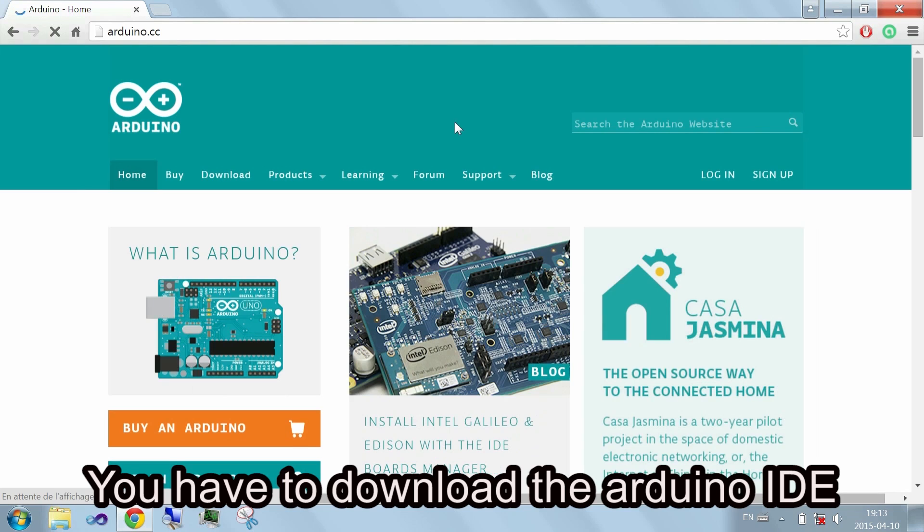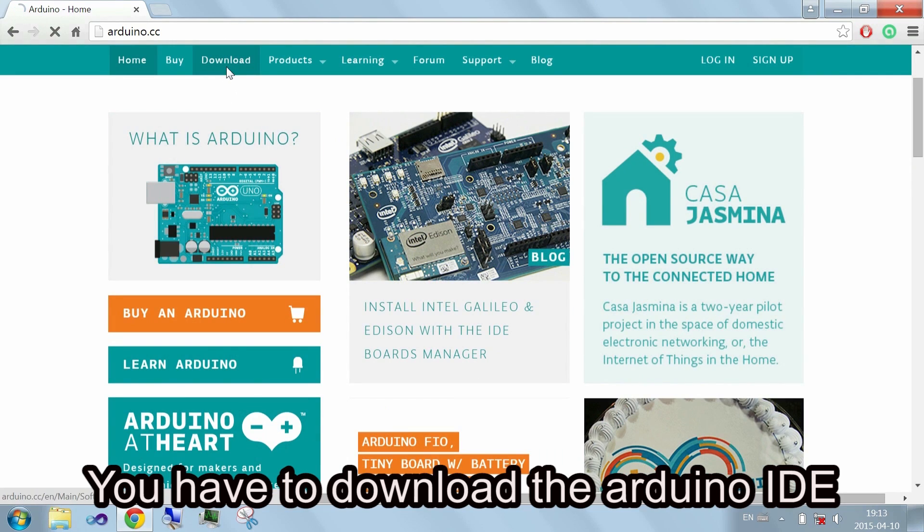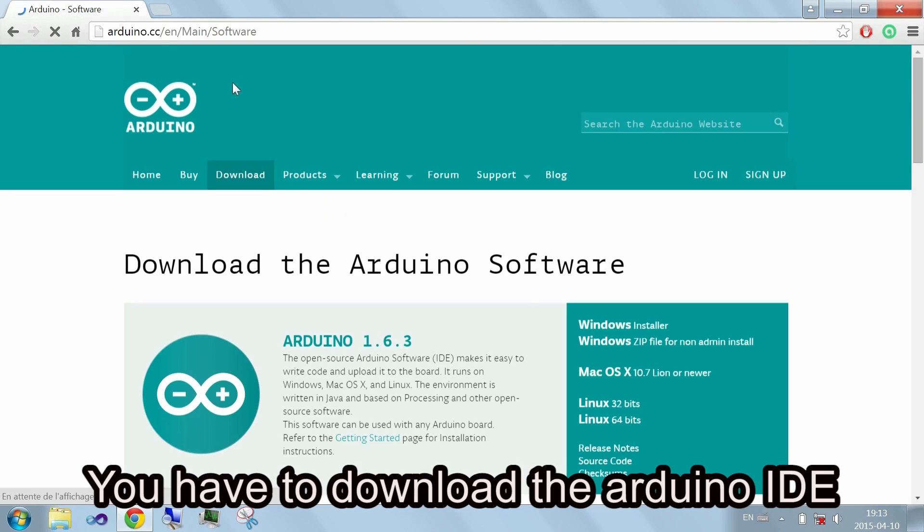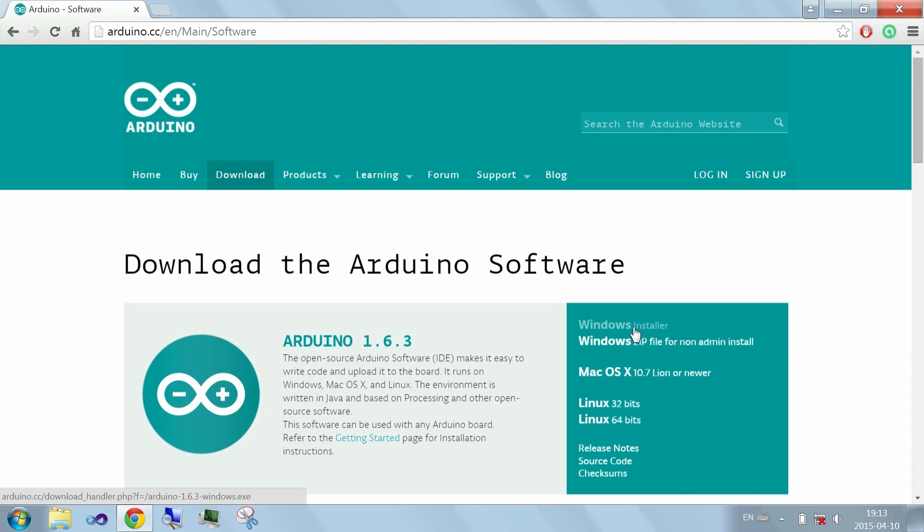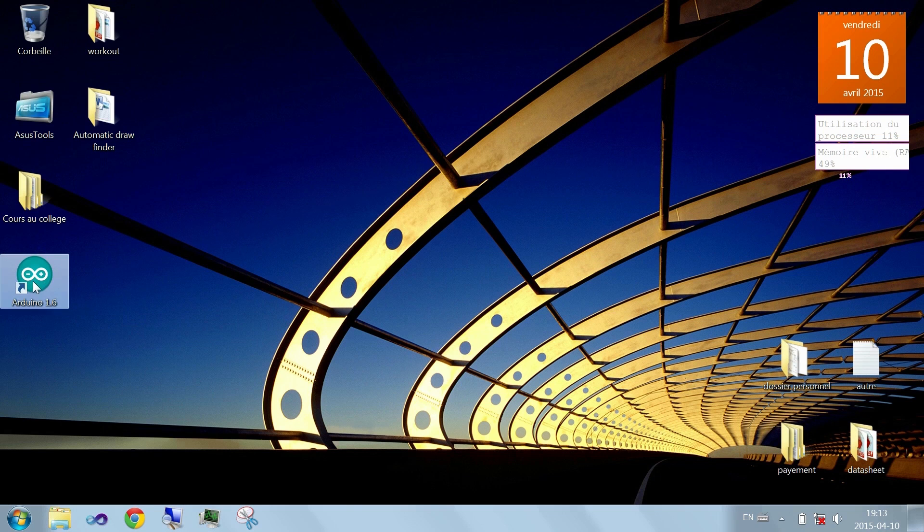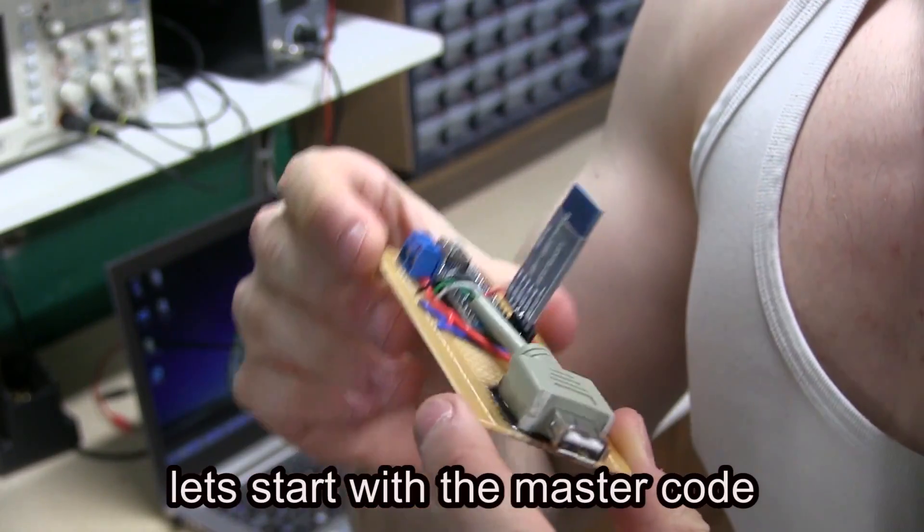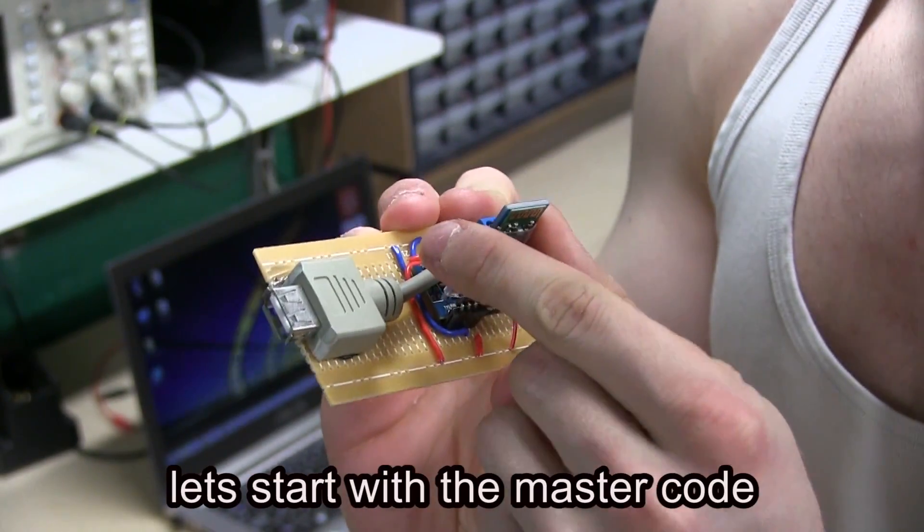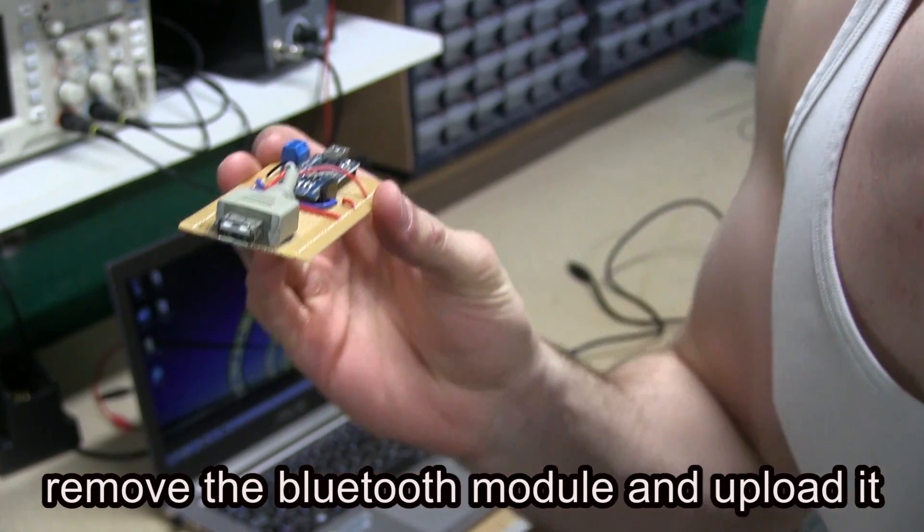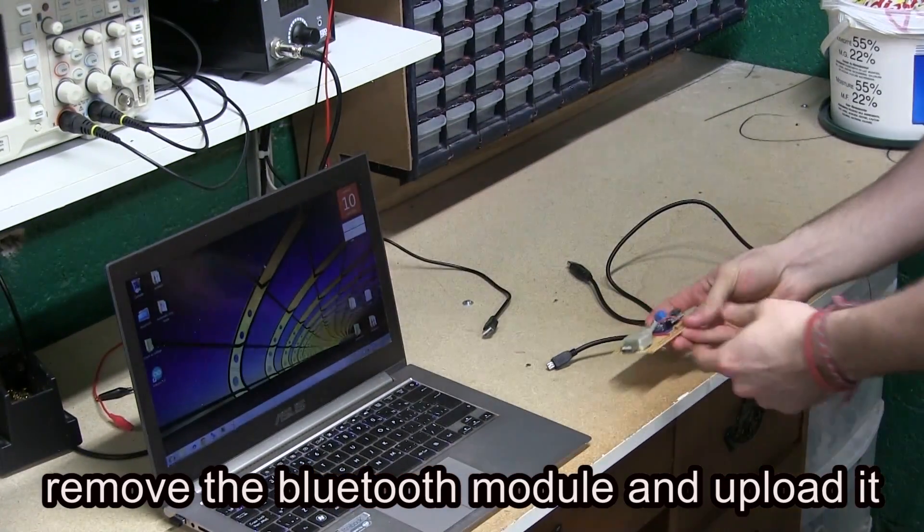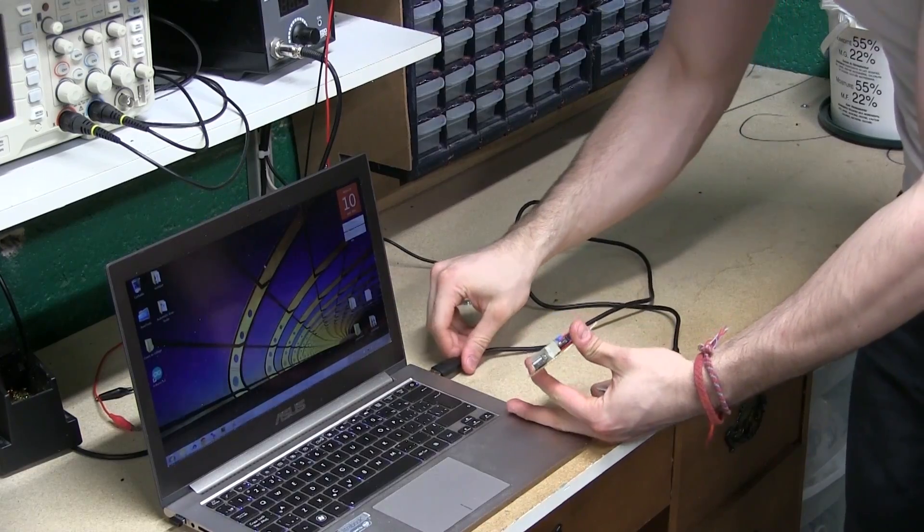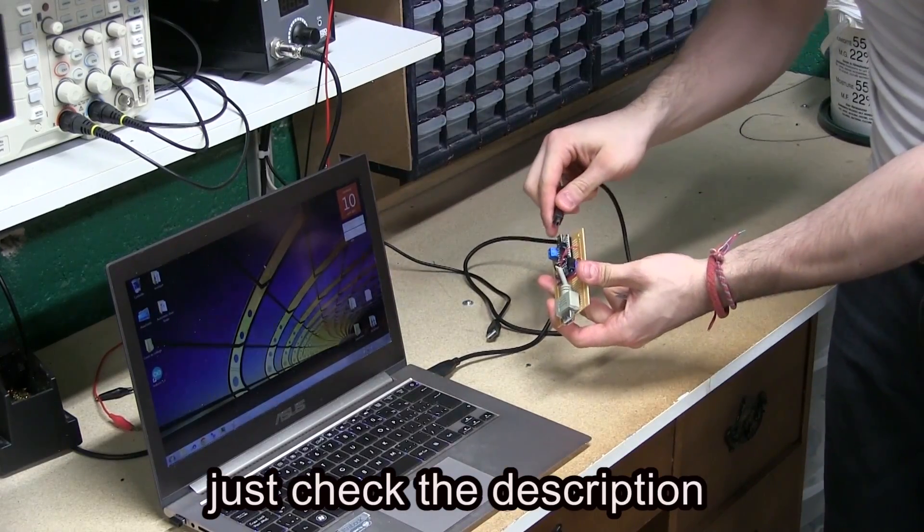So in this part you have to download the Arduino's interface. So let's start with the master code. Remove the Bluetooth module and upload the code. Just check the description if you want the code.